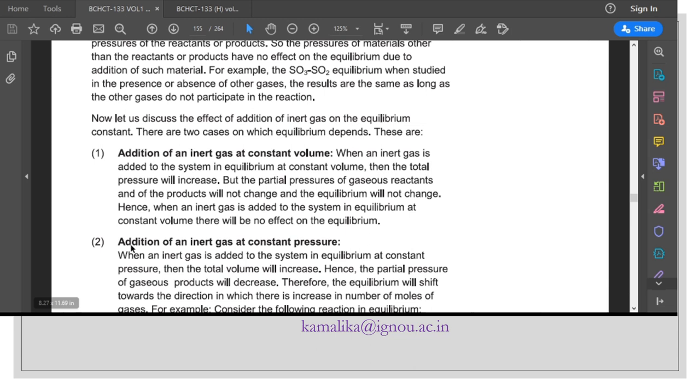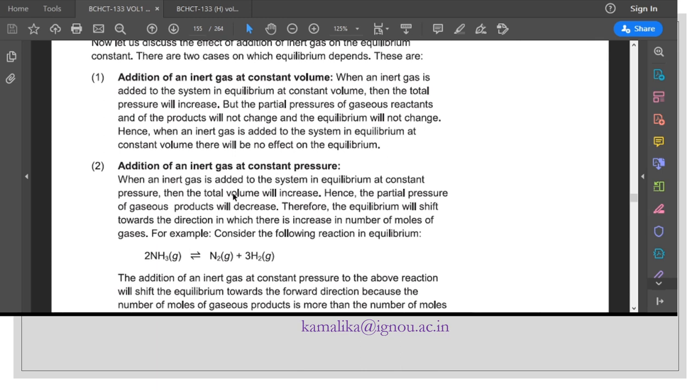When an inert gas is added to the system at equilibrium at constant volume, there will be no effect on the equilibrium. But when adding inert gas at constant pressure, the total volume will increase. Hence the partial pressure of gaseous products will decrease. Therefore equilibrium will shift towards the direction in which there is increase in number of moles of gases.